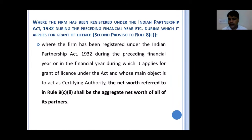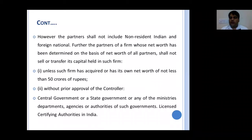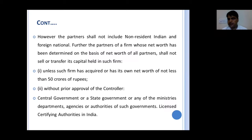Further, any firm in which the capital held in aggregate is more than 49 percent by NRIs or foreign nationals is also debarred from the certifying authority license. Rule 8 also provides that where the firm has been registered under the Indian Partnership Act 1932 during the preceding financial year, or in the financial year during which it applies for the grant of license, and whose main object is to act as a certifying authority — the aggregate net worth of 50 crore means the total net worth of all partners combined.